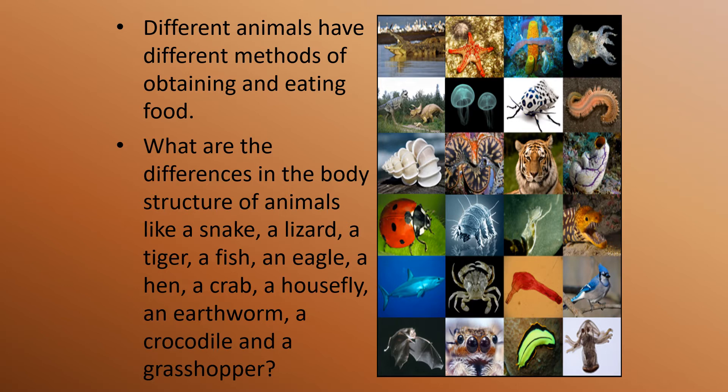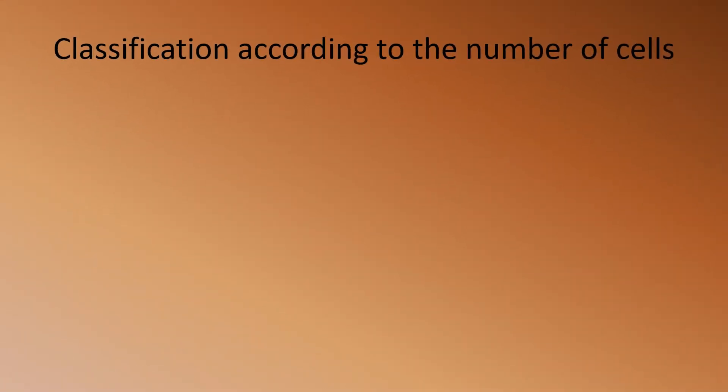What are the differences in the body structure of animals like a snake, lizard, tiger, fish, eagle, hen, crab, housefly, earthworm, crocodile, and grasshopper? All these animals are classified in different categories. Today we are going to learn about classifications. Let's see classification according to the number of cells.